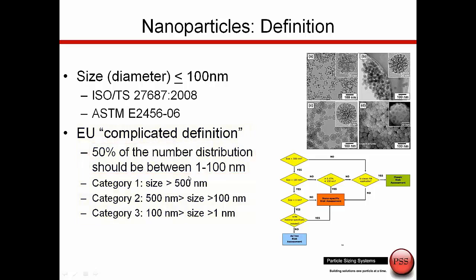The reason the EU came up with a more complicated definition is really about nanosafety concerns. They came up with a risk assessment flowchart with different categories of particles, saying there should be some kind of risk assessment down into category 3. But this isn't specific to pharmaceutical products — it's for more commercial products that consumers might be in contact with.